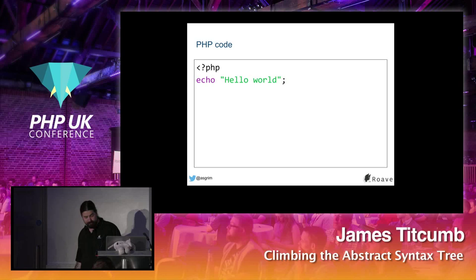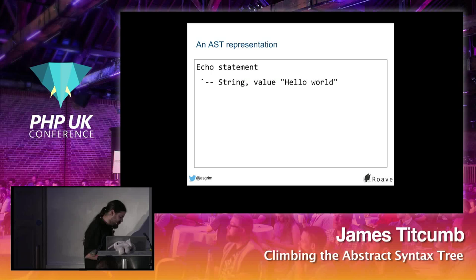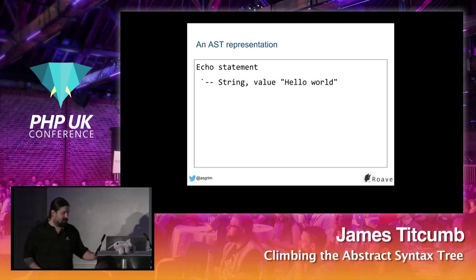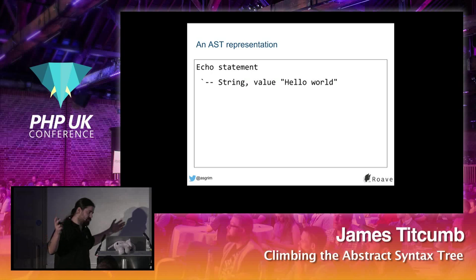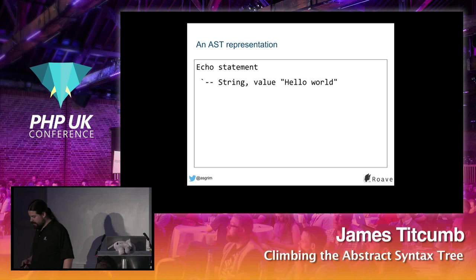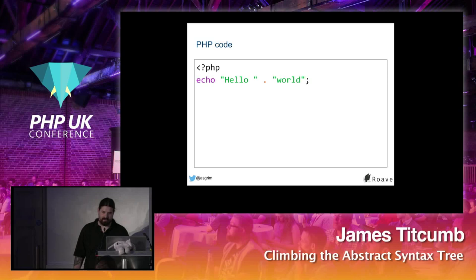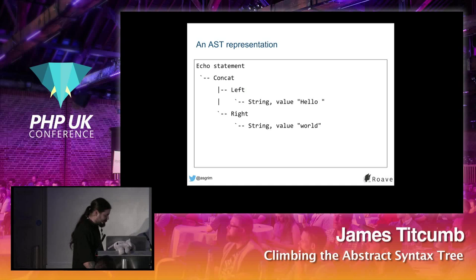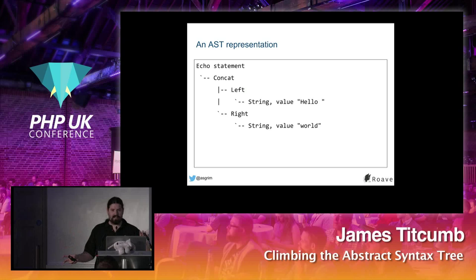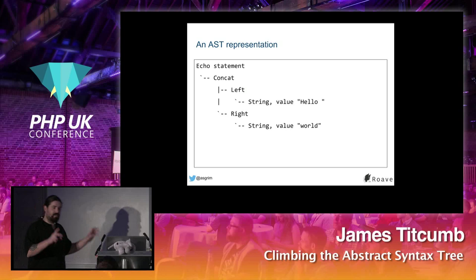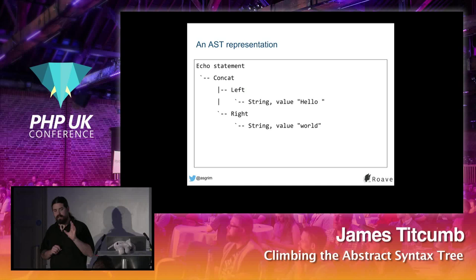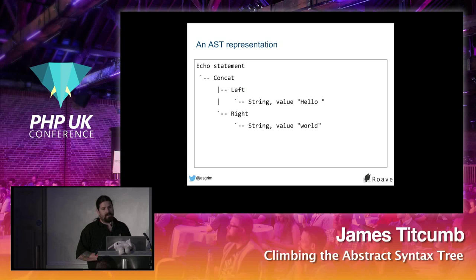Let's look at what an AST might look like. For 'echo "Hello World";' represented as a tree, we have an echo statement with a child value of a string scalar — value 'hello world'. For a string concatenation like 'echo "hello" . "world";', we have the echo statement with a concatenation binary operator as child, which takes left ('hello') and right ('world') operands.